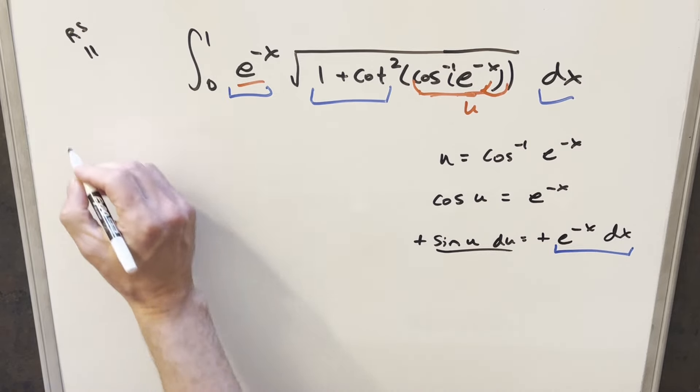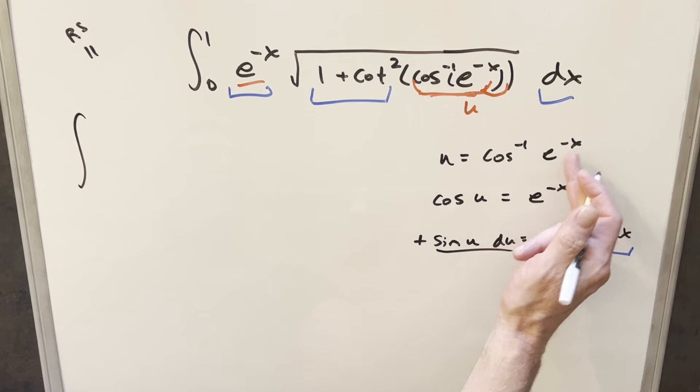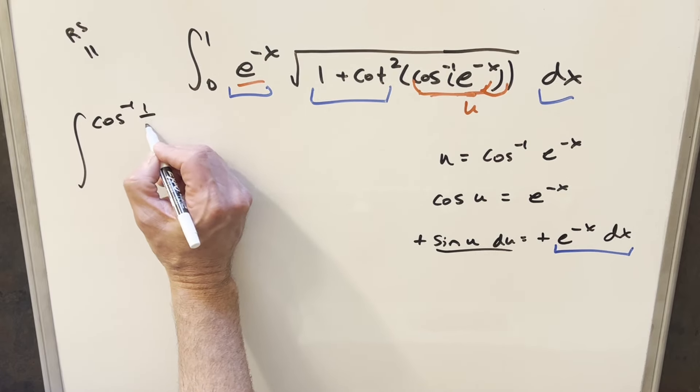And so I think we have everything we need to make a substitution. Starting off, we'll have our one, we'll plug one in here. This is going to be arc cosine of e to the minus one. I don't know what that is, so I'm just going to leave it in this form. But I'm going to write the e to the minus one as one over e.